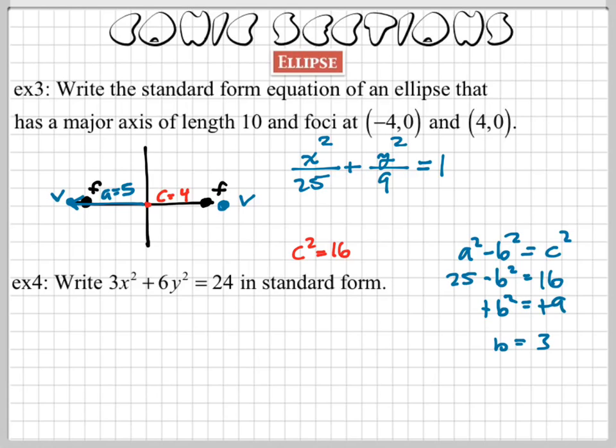Now, just to recap, our major axis is the longer axis. It connects the two vertices. The minor axis is the one that goes the other way. And now that we know what b squared is, I know I'm going to go up 1, 2, 3 spaces for my co-vertices and go down 1, 2, 3 spaces for my co-vertices. This is the minor axis, this is your major axis. Now you can draw a more accurate ellipse.